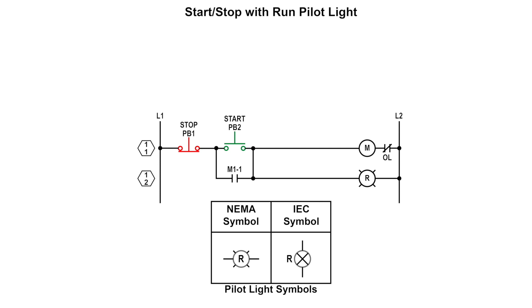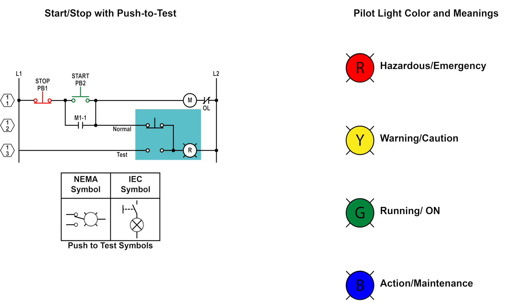Aside from regular pilot lights, there are some out there that are push to test. These types of pilot lights are a great way to troubleshoot to see if the light is faulty. In the example provided, whenever the button is pressed, it breaks the normal signal input to the light and makes the circuit for the other set of contacts wired.